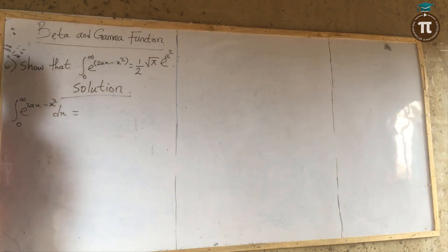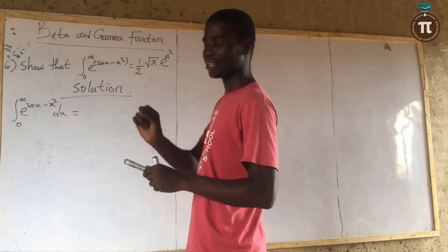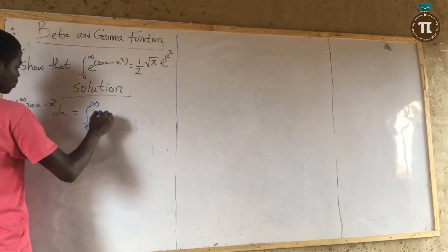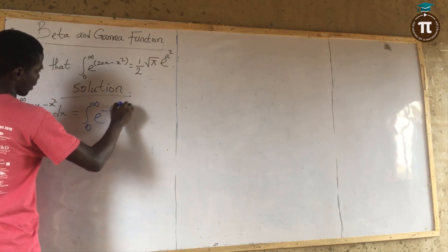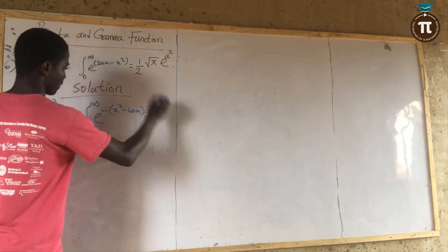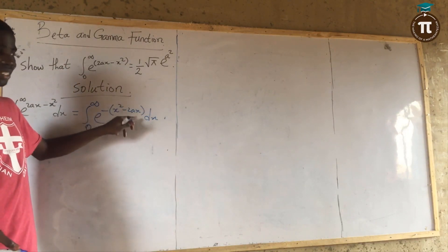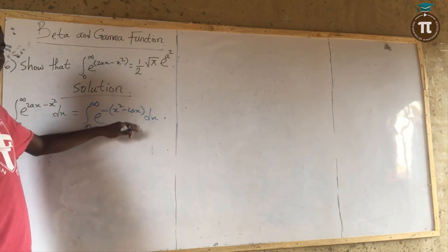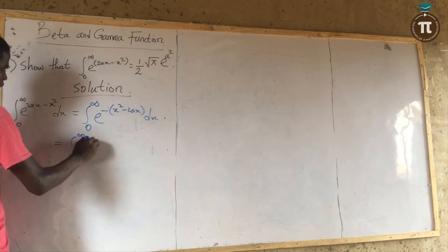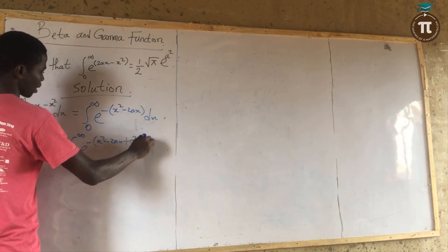I notice something — if I factorize out a minus sign, I will have the integral from 0 to infinity of e raised to the power of minus (x squared minus 2ax) dx. So I will make sure this becomes a perfect square. This is x squared minus 2ax. Let me add a squared and subtract it back to maintain the equation.